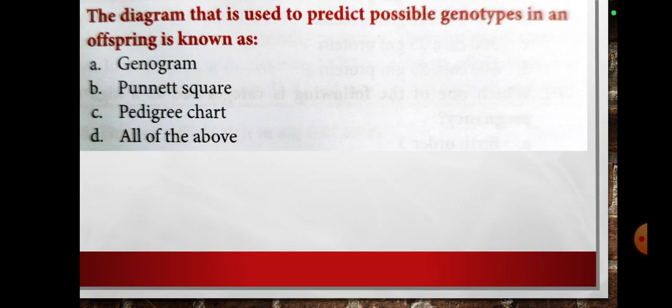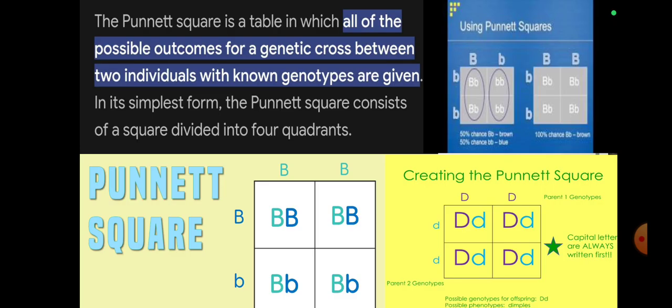The answer is Punnett square. The Punnett square is a table in which all of the possible outcomes for a genetic cross between two individuals with known genotype are given. In its simplest form, the Punnett square consists of a square divided into four quadrants.